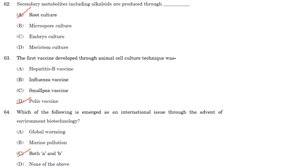Secondary metabolites including alkaloids are produced through root culture. Answer is option A.